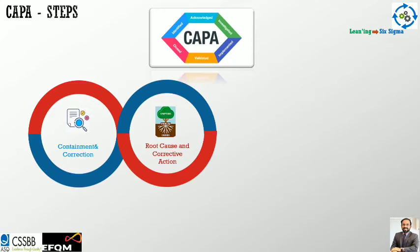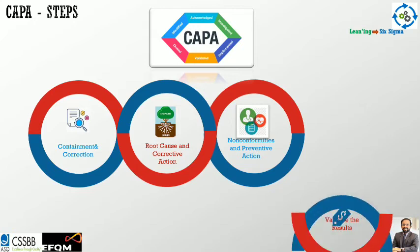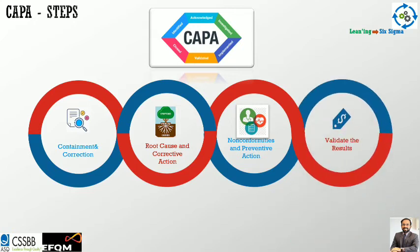Third would be non-conformities and preventive action — find out what else can go wrong, what are the potential failure modes the process still has that could produce defects not yet known. That is the third level. Fourth would be to validate the result, because you cannot just theoretically design a process — you need to validate, run it again, and then implement it. Broadly, these are the four steps.